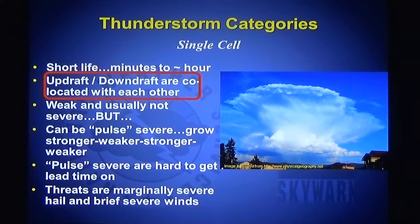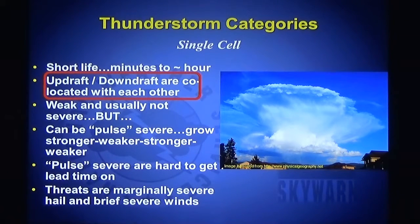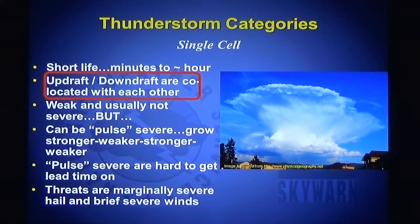Single cell storms typically do not last very long because the updraft and the downdraft are too close to each other. The downdraft chokes off the updraft and the storm cannot continue for too long or grow very strong. It can be pulse severe — it can produce large hail and some high wind in a pulse-type fashion, meaning it grows stronger and then weakens, stronger and then weakens, kind of like a pulse.